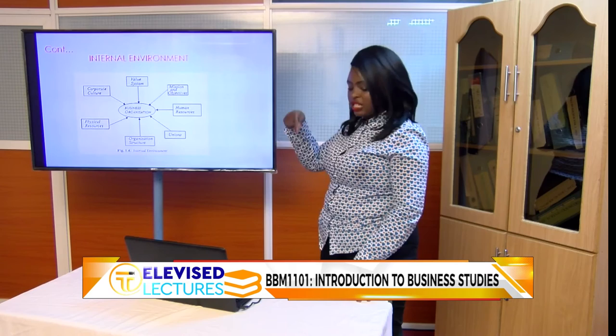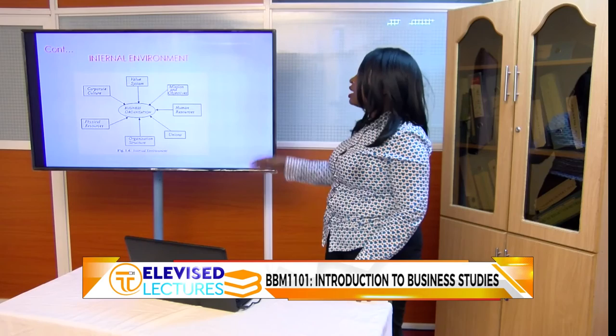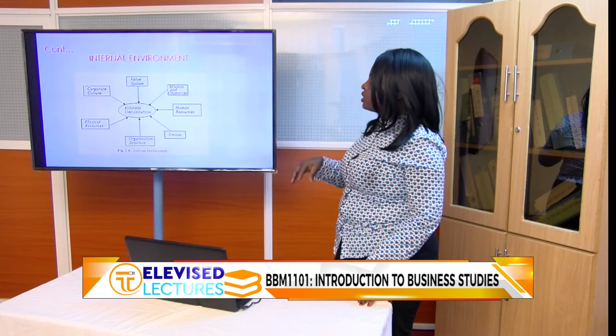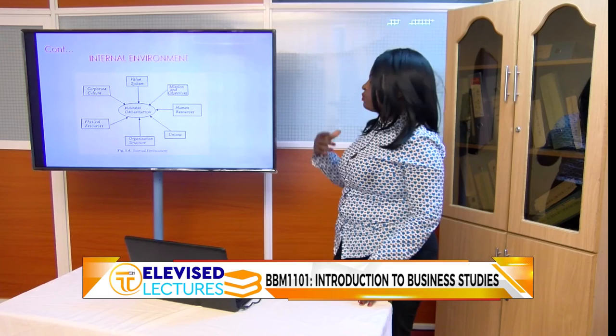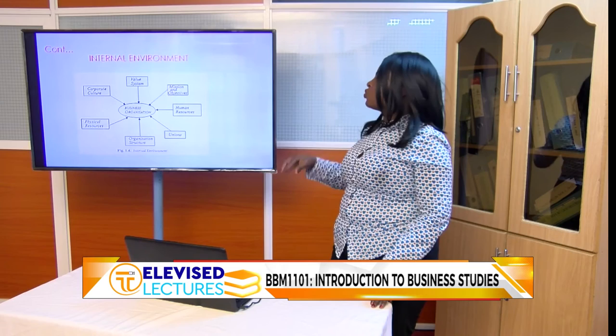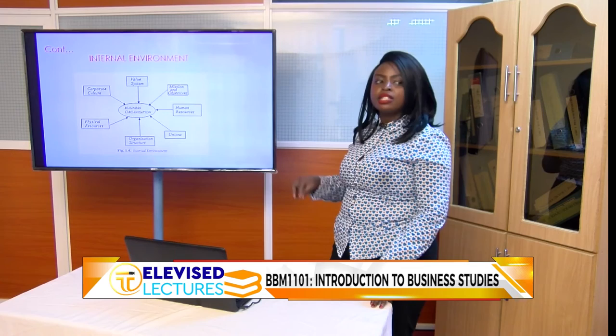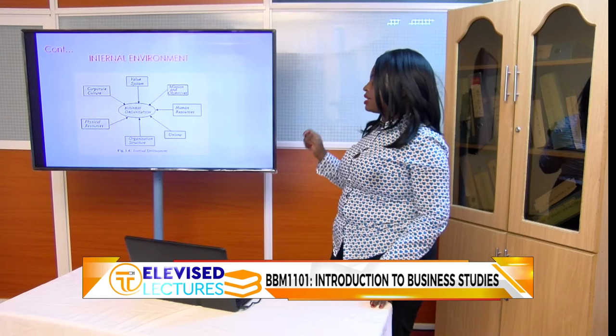The diagram also looks at human resource, which we have already discussed. Then we have unions — organizations formed within the business, such as trade unions, that assist the business to run. In case of conflicts among employees, because you are dealing with human beings, you have to have a union that takes care of the welfare of the employees and customers.